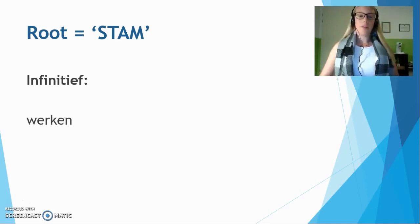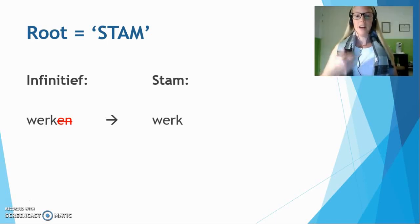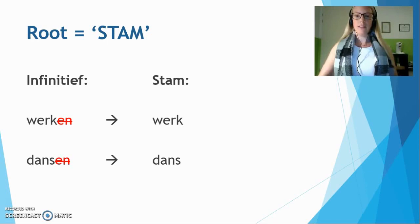So here we have the infinitive werken, which means 'to work'. And now we want to make the stam. How do we do that? Well, we simply remove -en. What are we left with? The stam. The stam is werk. You can use the stam for the first person singular, so for ik — I. Ik werk is 'I work'. Seems pretty easy, right? Let's do another one. Dansen means 'to dance'. Take away -en, and we are left with dans. So if you want to say 'I dance', you say ik dans.